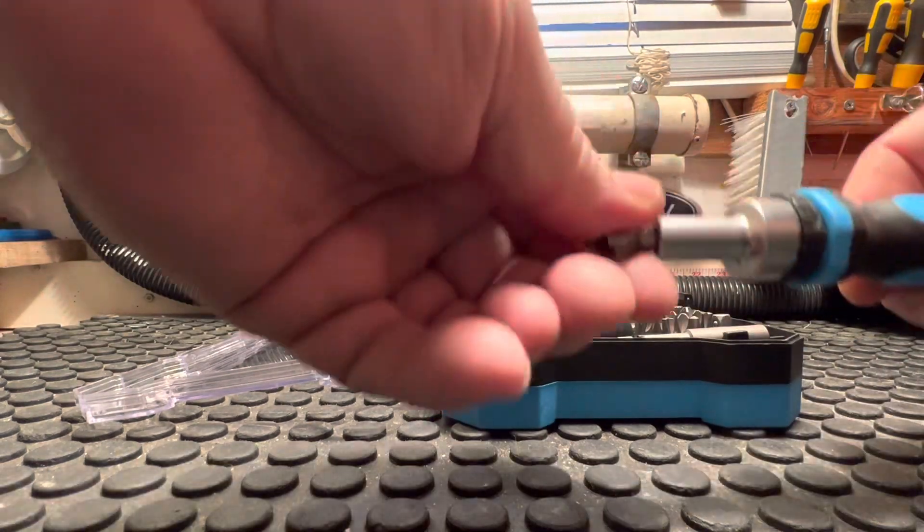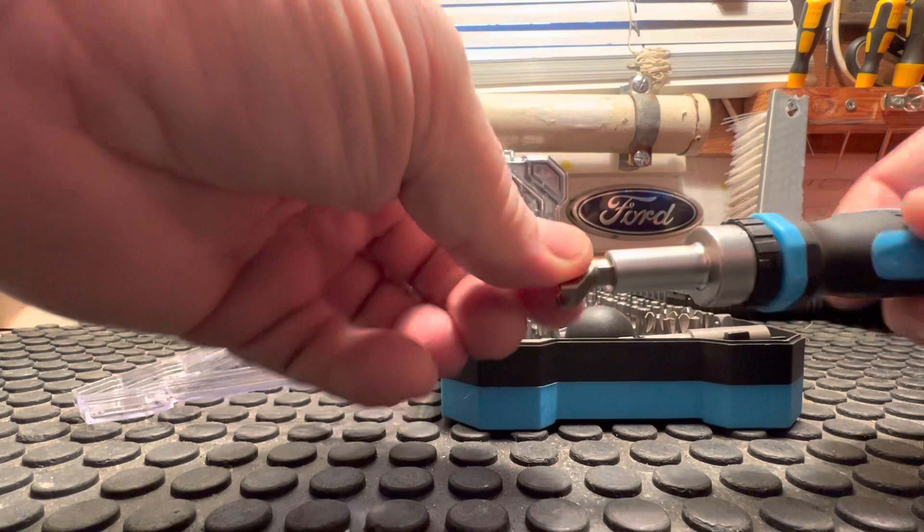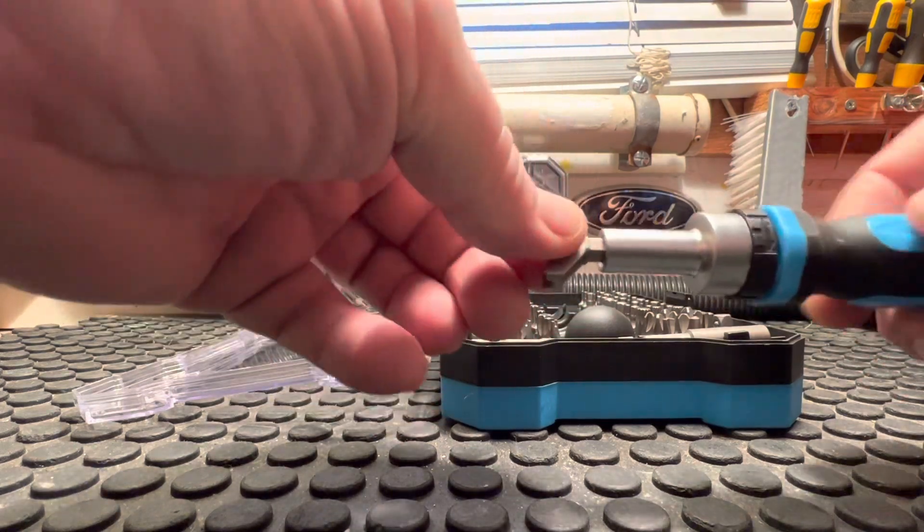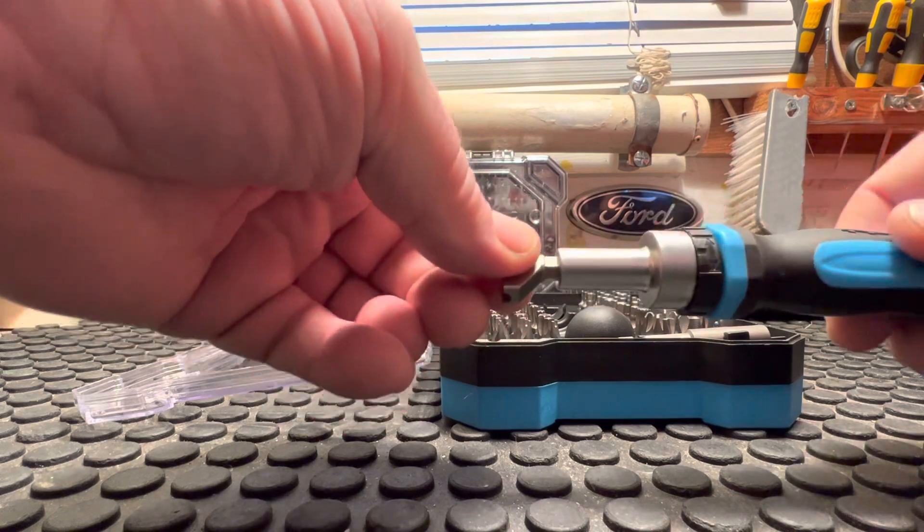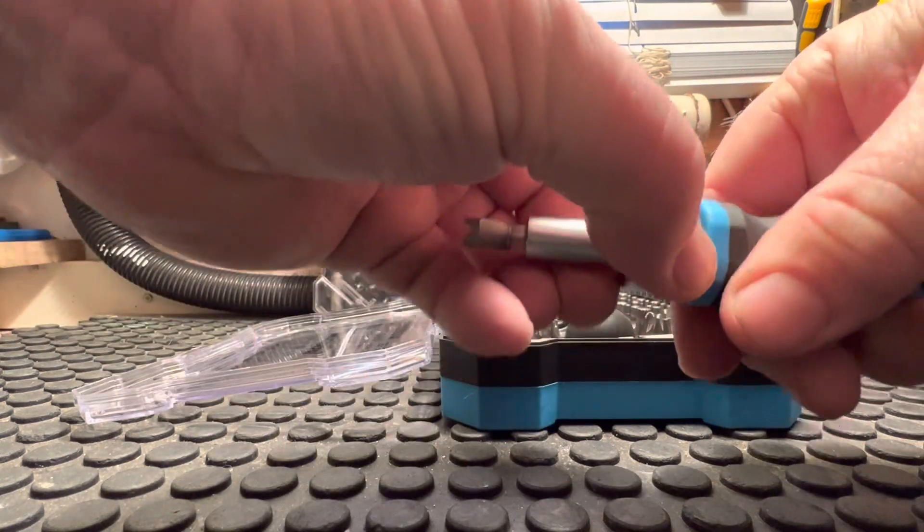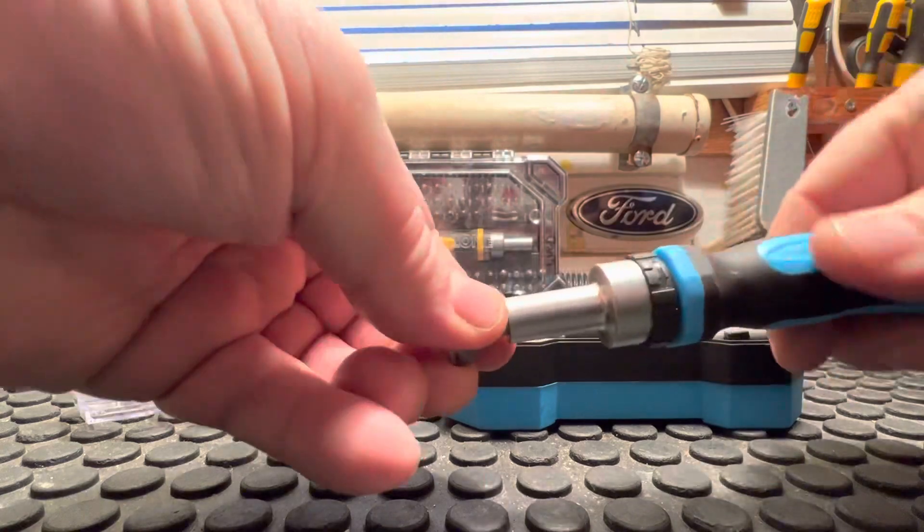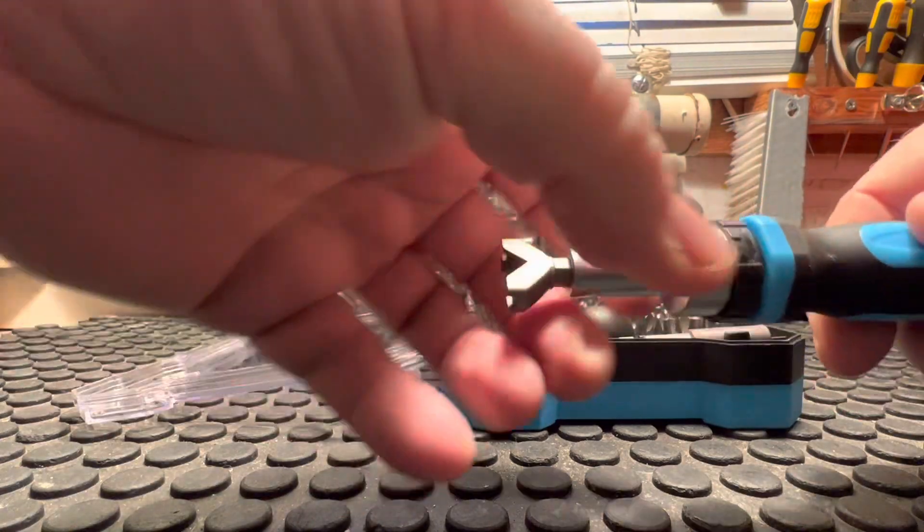Right. Now, it's a ratchet screwdriver. One way. The other way. Put it in the middle and it locks it both ways.